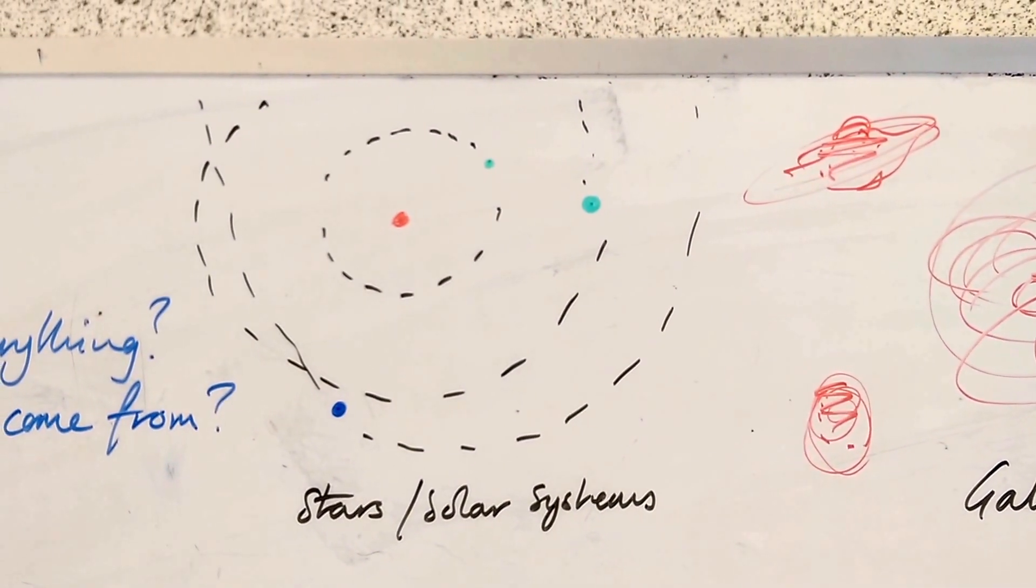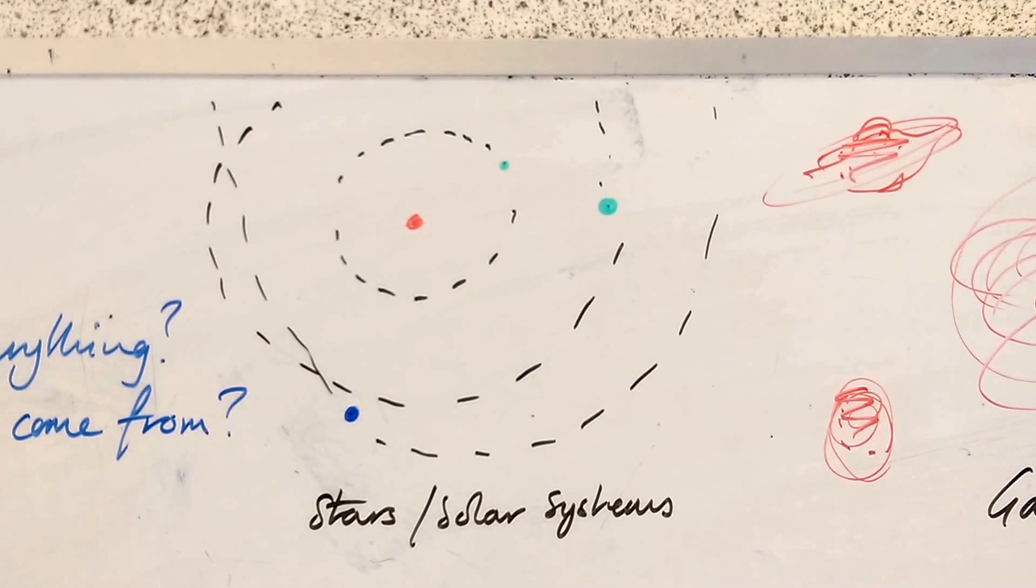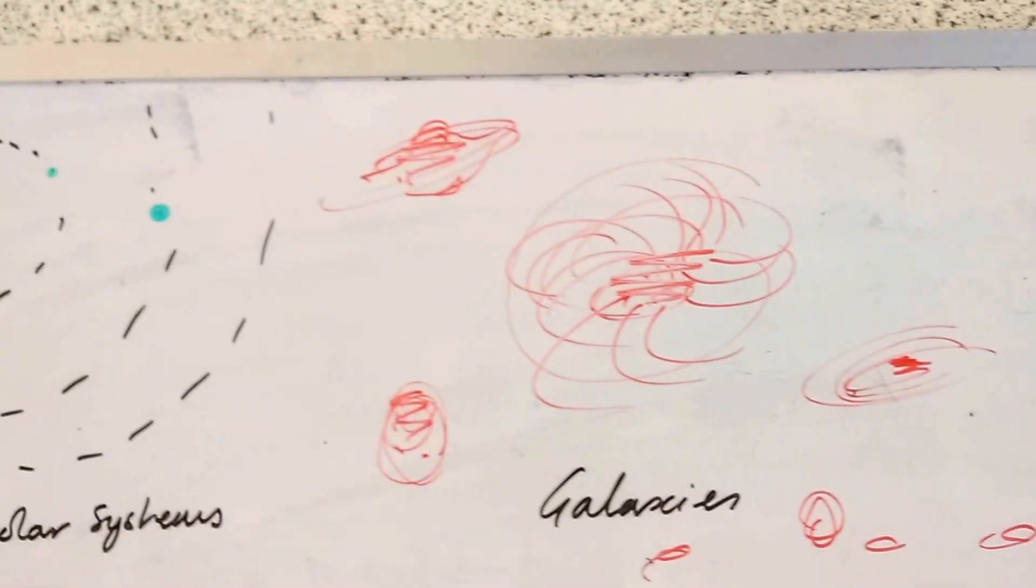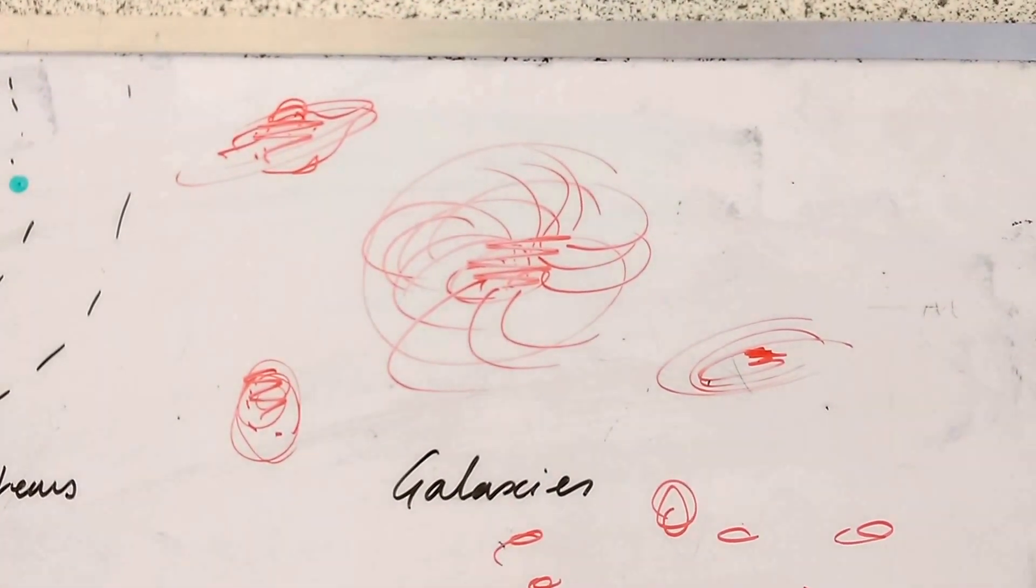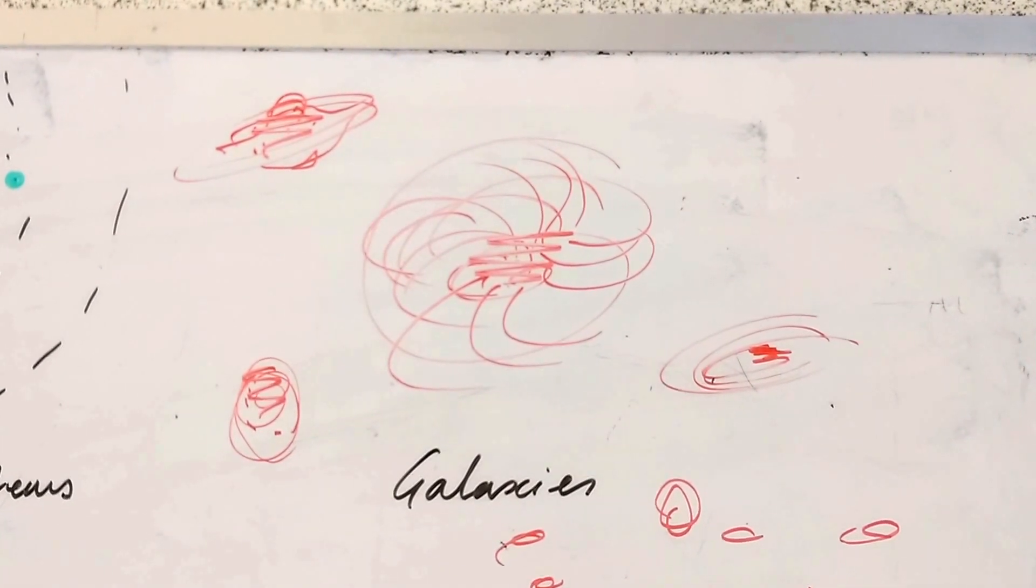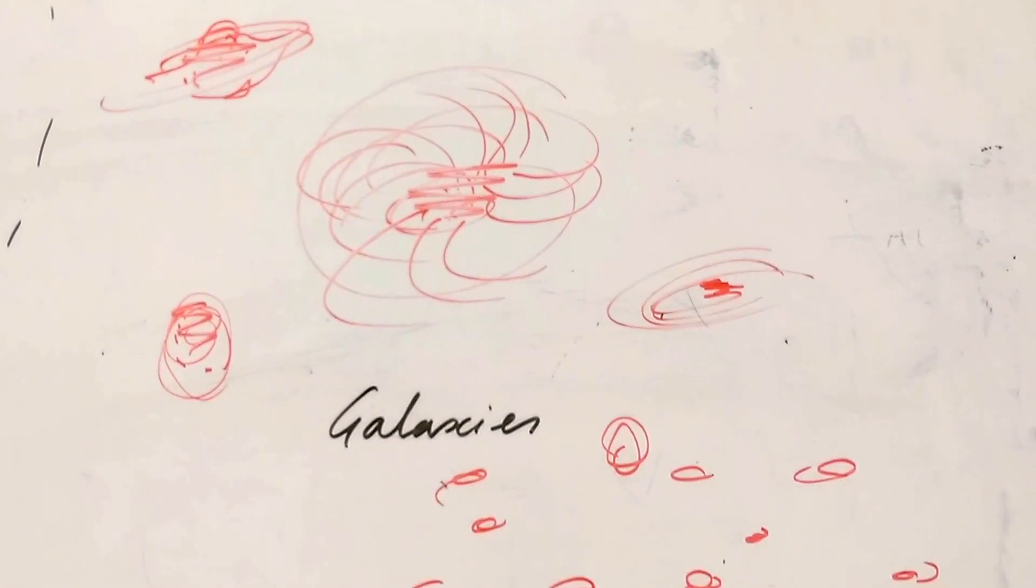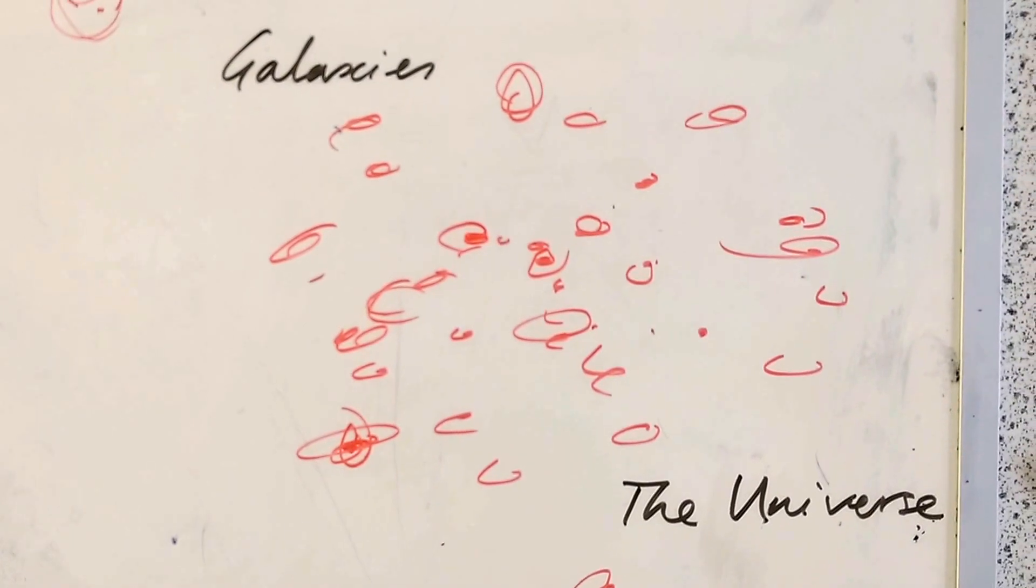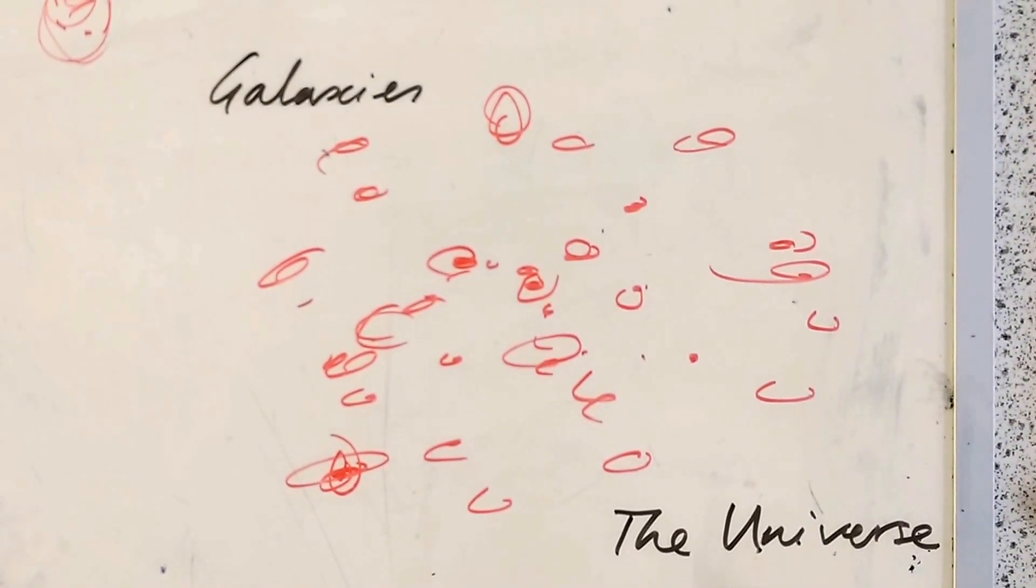Stars like ours are orbited by planets into solar systems, and these stars, of which there are billions, are joined together in galaxies. They're brought together by gravity. These galaxies are all clustered together and form a ginormous web, which we call the universe.